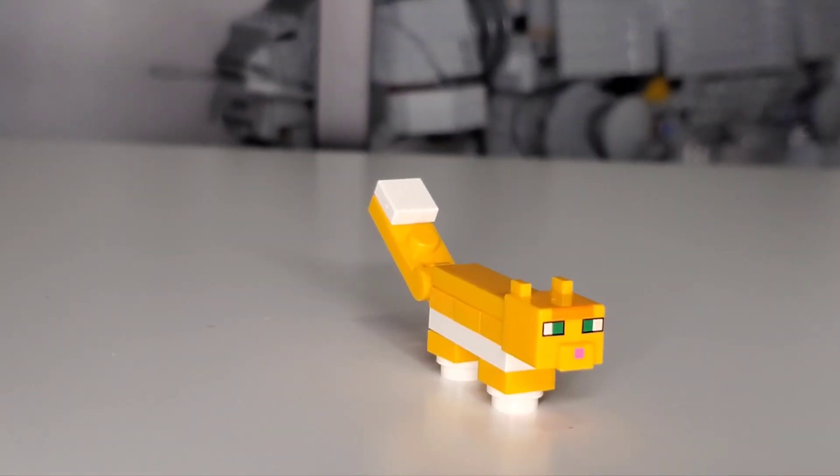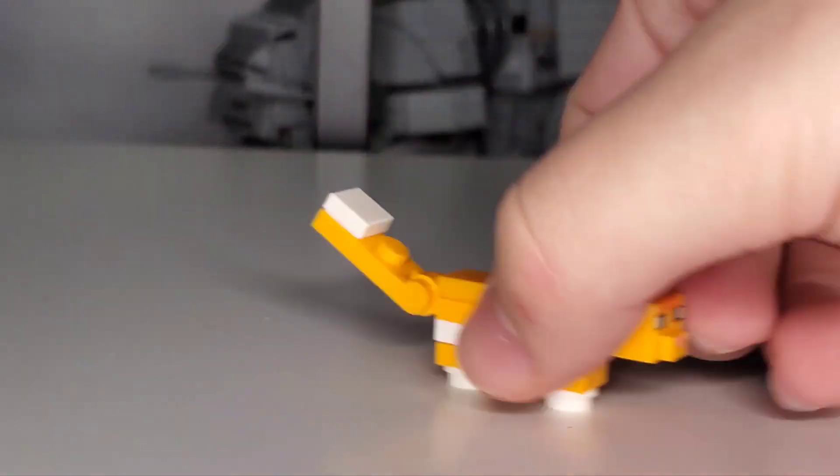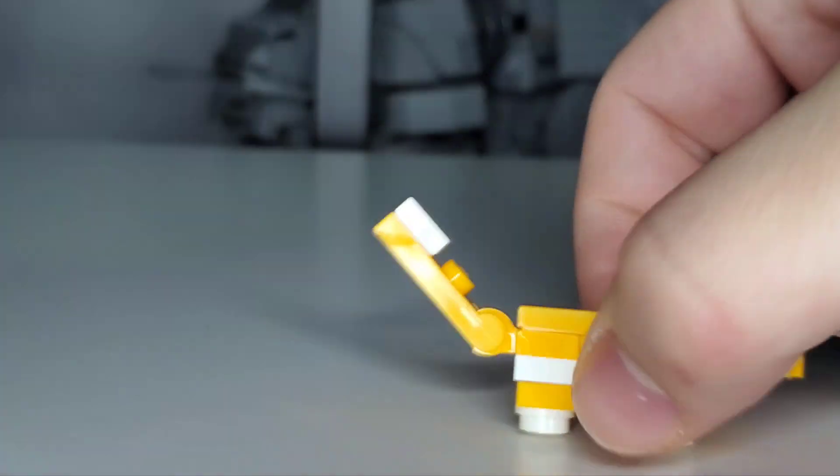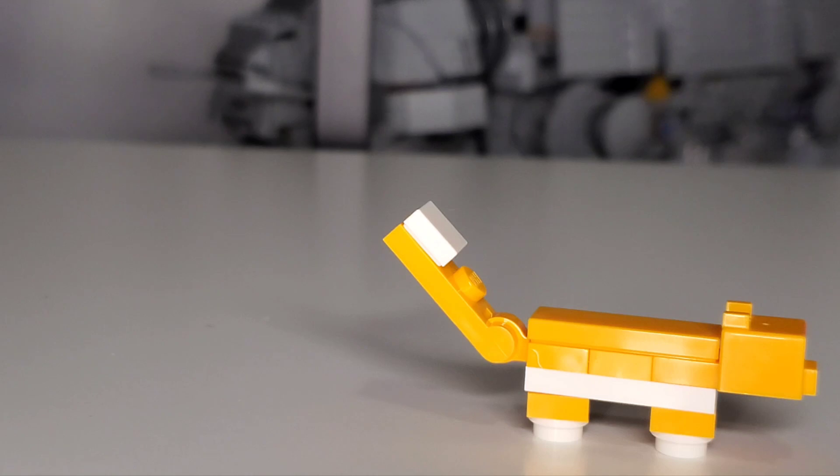Now there is one play feature included in this cat, and that's that you can move its tail down and then back up if you so choose. Now this is totally optional, but it's critical to the overall value of the set.